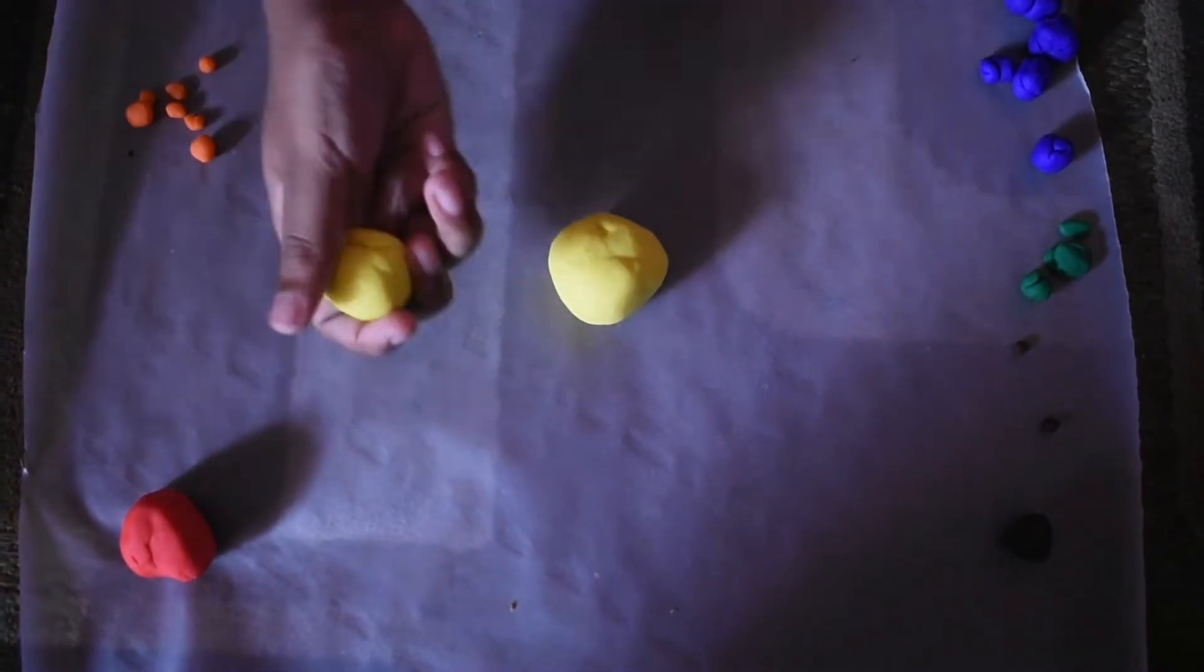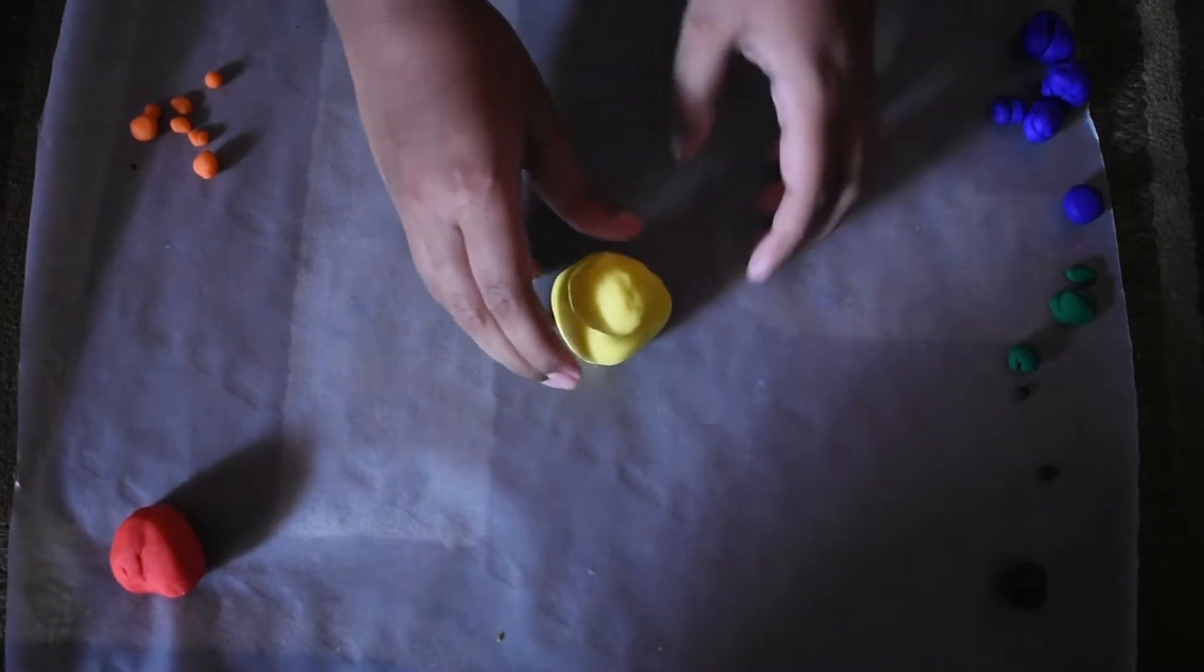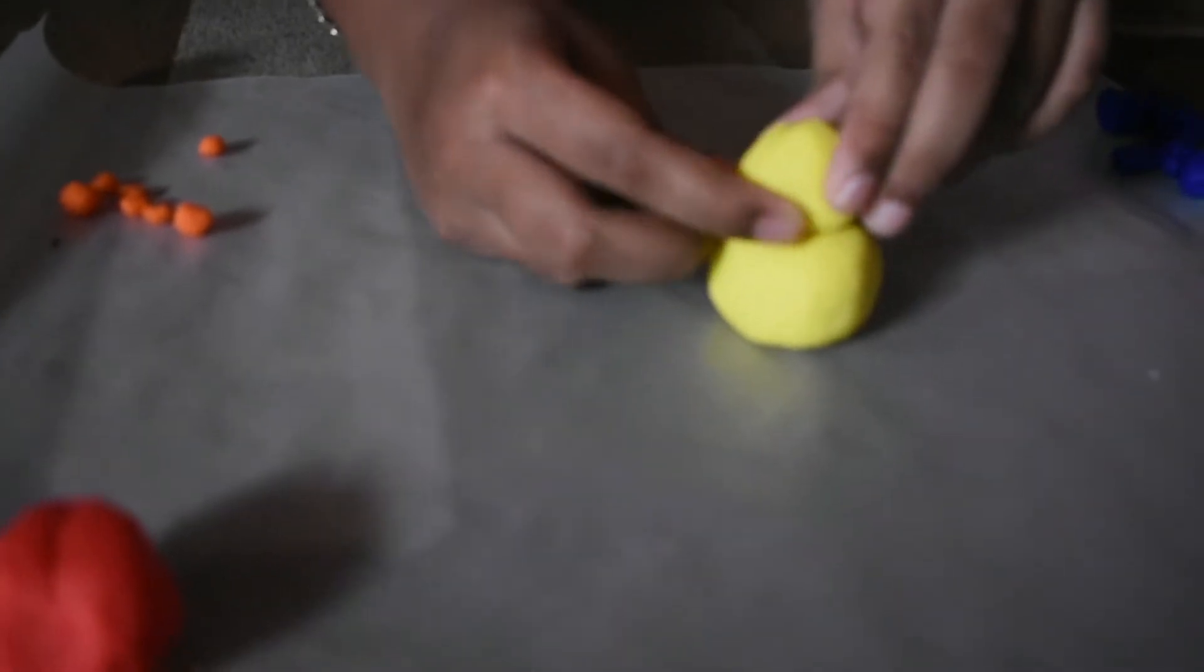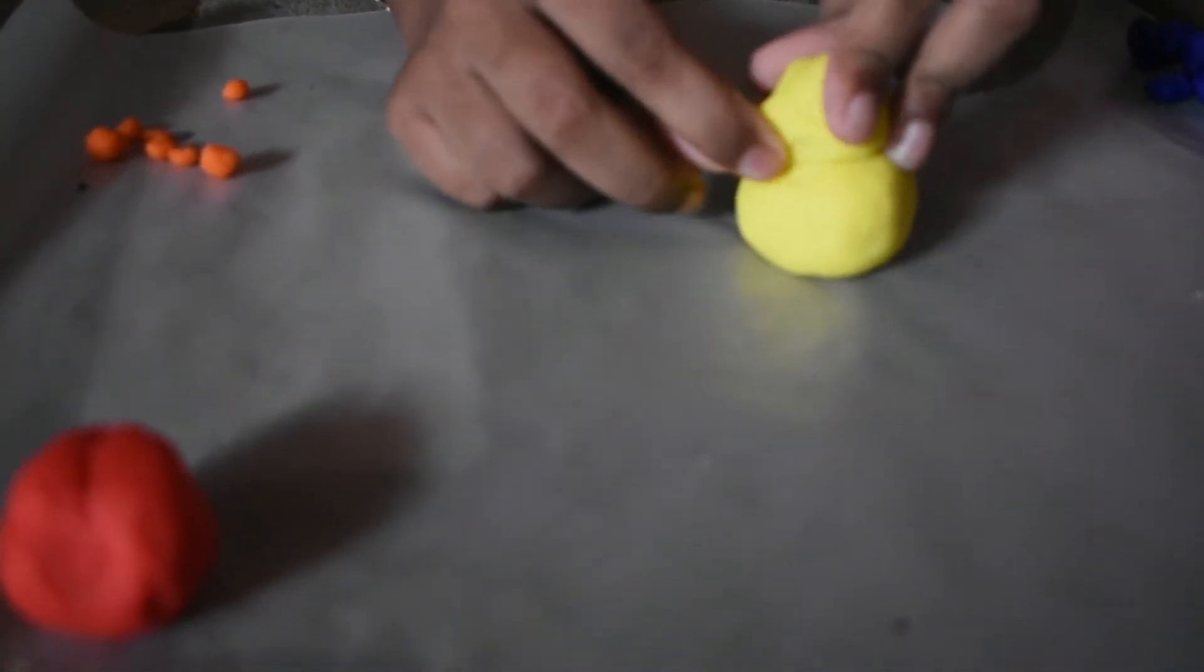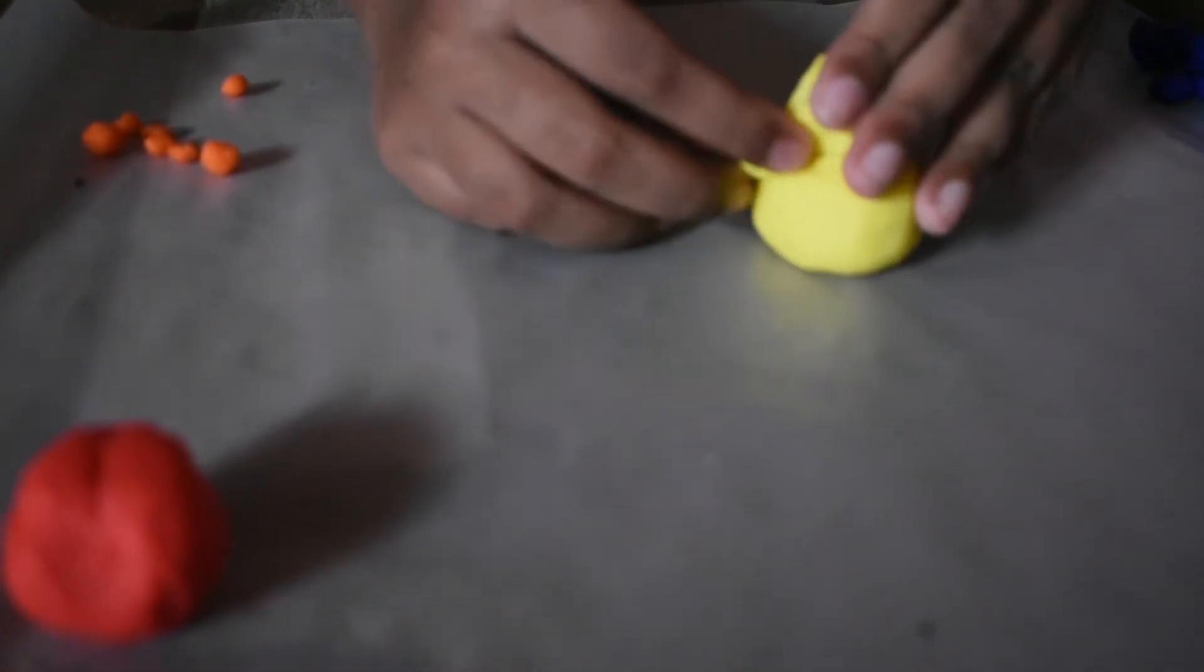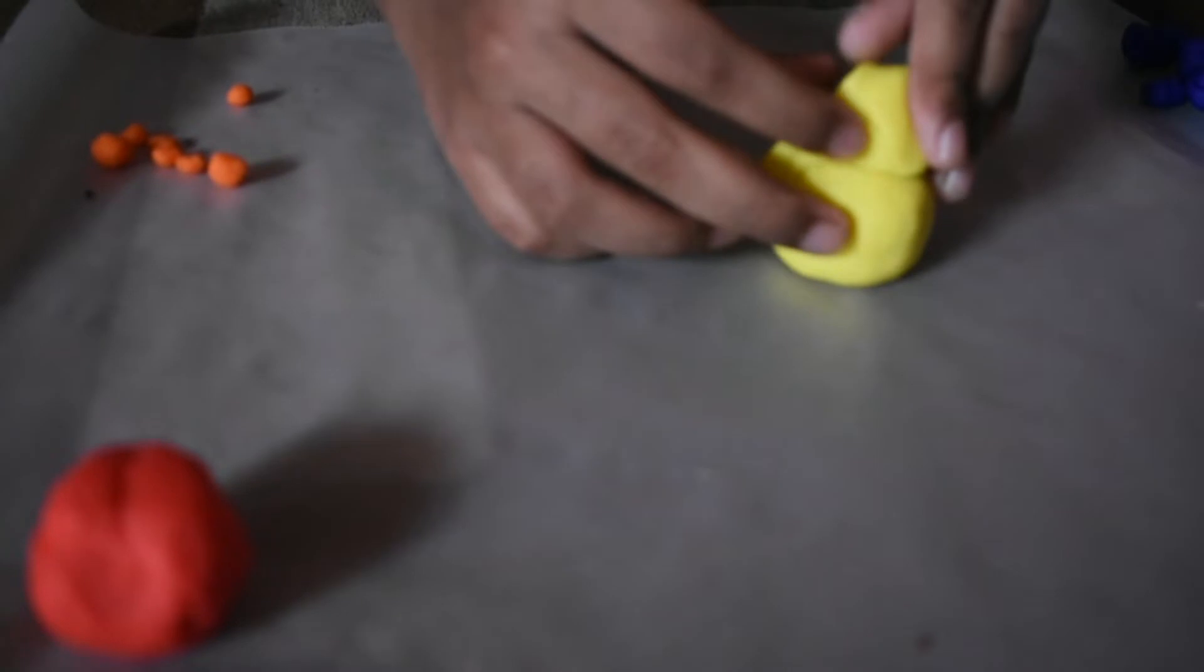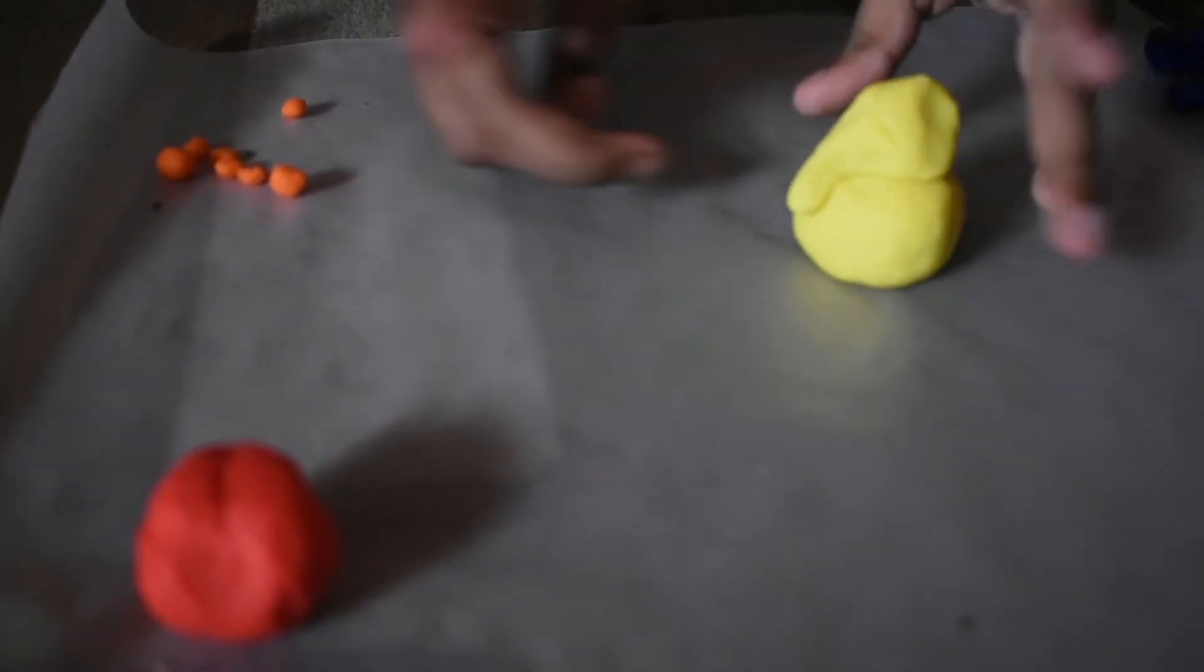Now take a medium ball and put it like a face. Now let's make the trunk. Press it at the front to make a trunk. I have made the trunk.